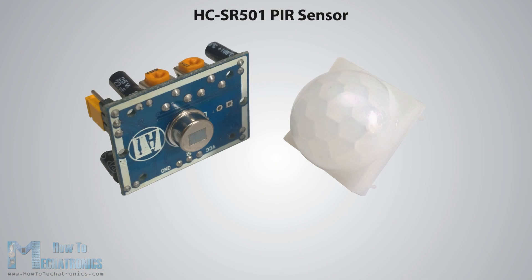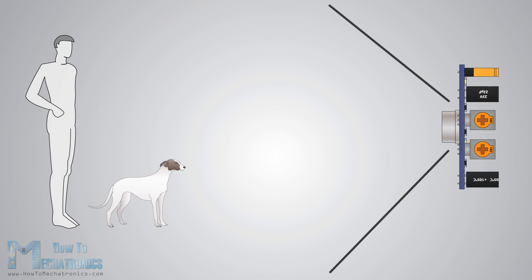First, let's explain the working principle. The module actually consists of a pyroelectric sensor, which generates energy when exposed to heat. That means when a human or animal body will get in the range of the sensor, it will detect a movement because the human or the animal body emits heat energy in a form of infrared radiation.